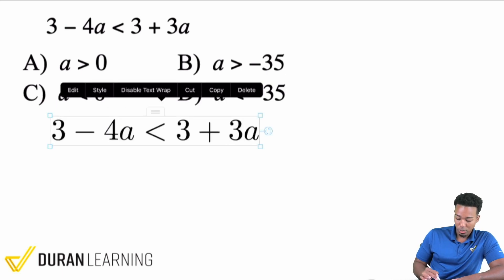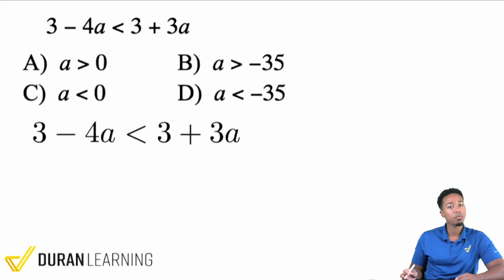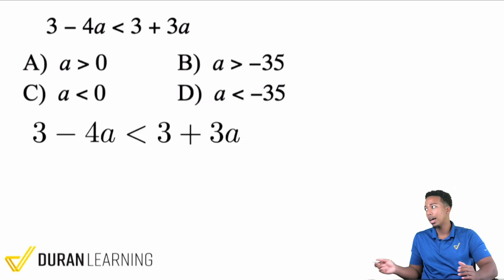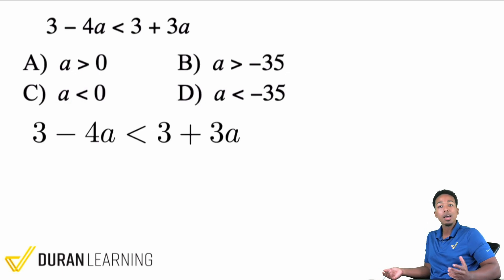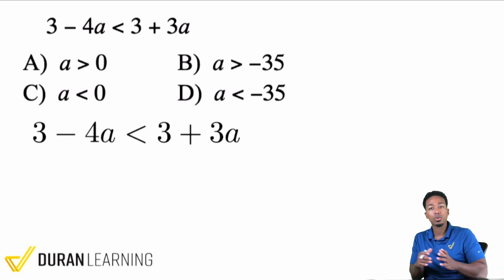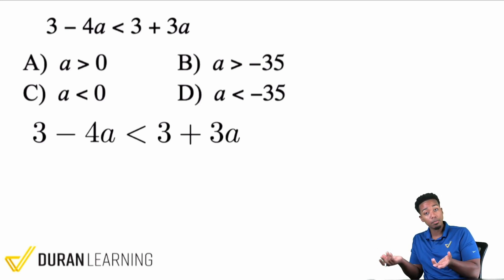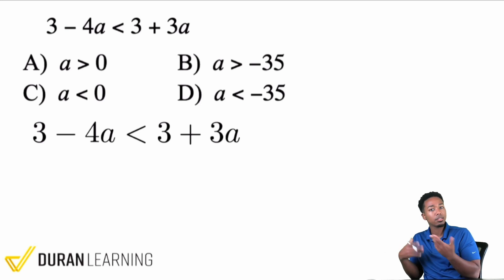what we're going to do here is we are going to solve this. This is multi-step because we have variables on both sides, letters on both sides. So really all we have to make sure we do is move the letters to the same side, move the numbers to the same side, and then divide or multiply whatever you got to do.